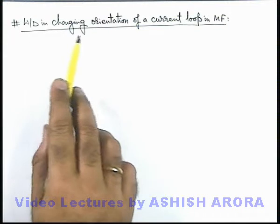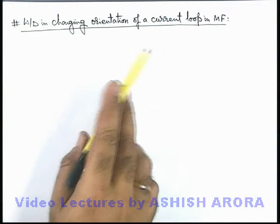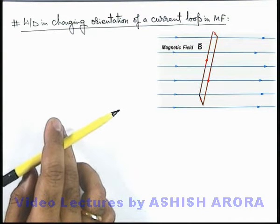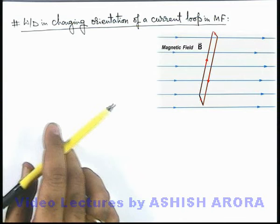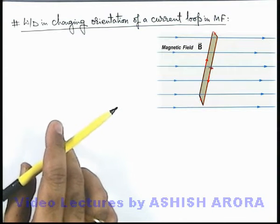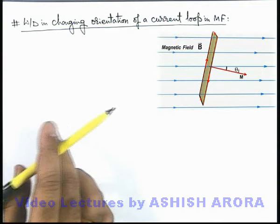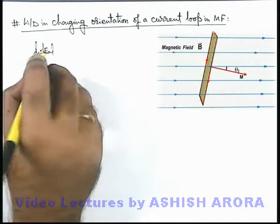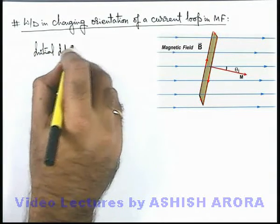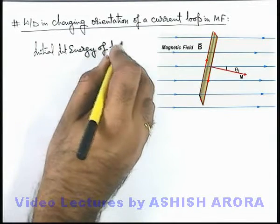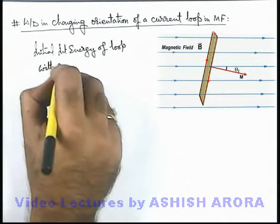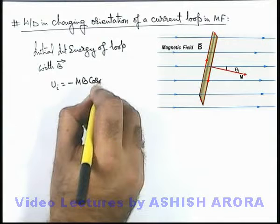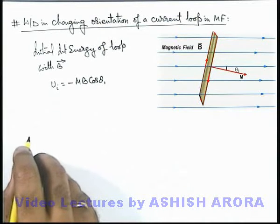Let us discuss work done in changing the orientation of a current-carrying loop in a magnetic field. Here, in a uniform magnetic field, a current-carrying rectangular loop is placed. The direction of its area vector or magnetic moment vector makes an angle theta with the direction of the magnetic field. The initial interaction energy of the loop with B vector is minus m B cos theta 1, because it makes an angle theta 1 with the direction of the magnetic field.